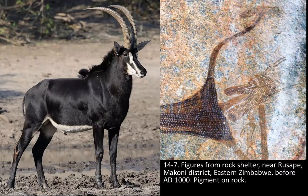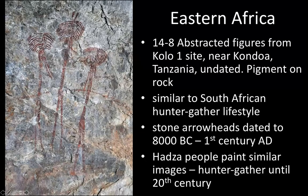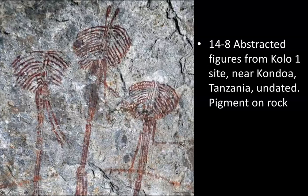Modern San people have these relationships with animals. In Eastern Africa there are also some peoples, like the San, who are among the few peoples left in Africa that are hunter-gatherers, with stone arrowheads dated to about 8,000 BC until the 1st century AD. The Hadza people, who were also hunter-gatherers until the 20th century, paint similar images. Your interpretation is as good as mine — this is another one where you might want to take to the extra credit board. Many previous classes had a lot of ideas about it.